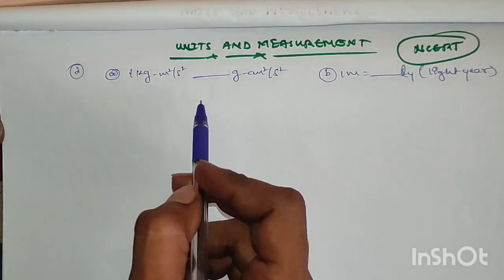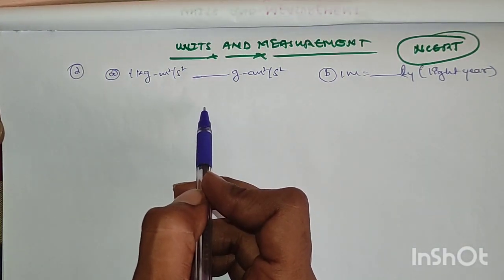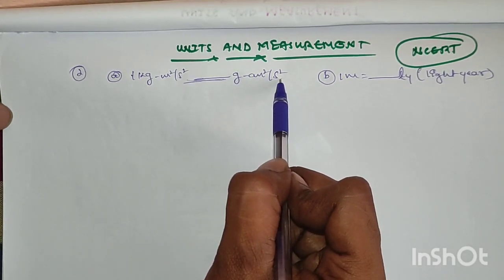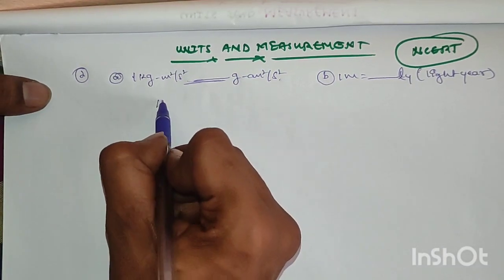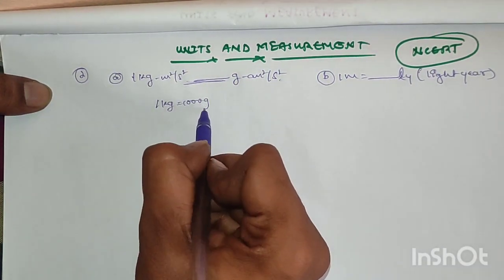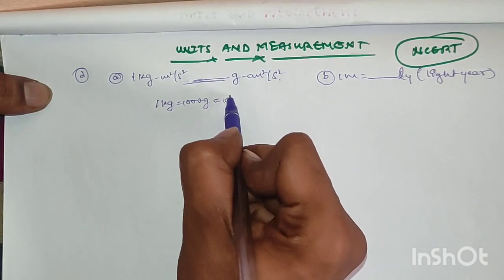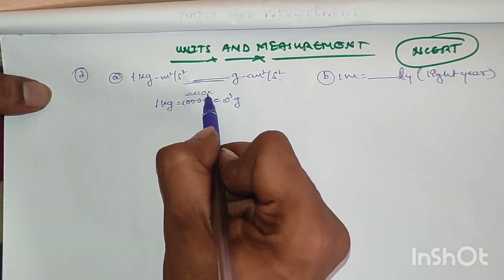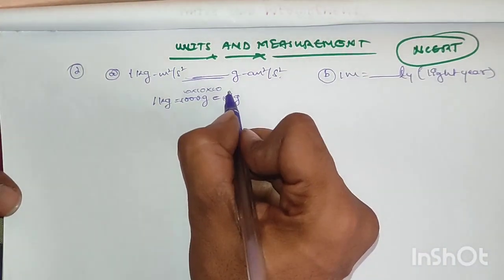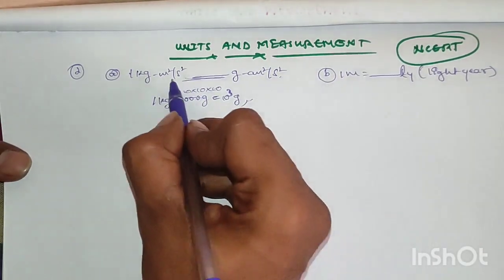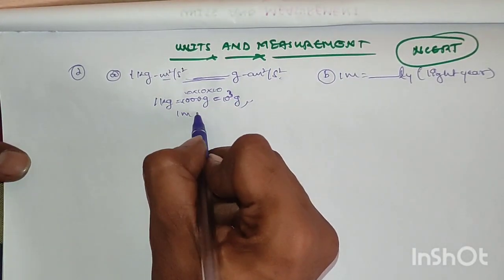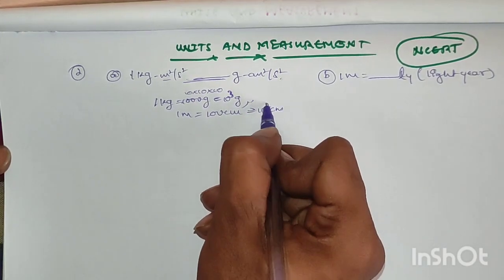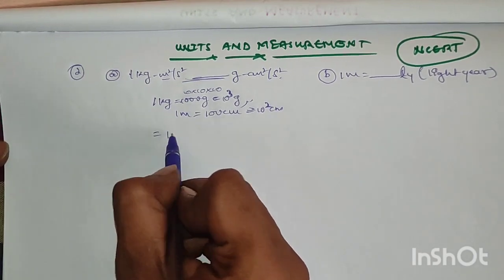The question is to fill in the blanks: 1 kg·m²/s² converted into g·cm²/s². Here, 1 kg equals 1000 grams, that is 10 to the power of 3 grams. Next, 1 meter equals 100 centimeters, that is 10 to the power of 2 centimeters.